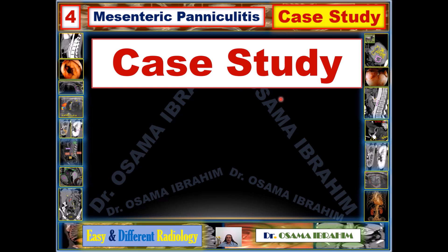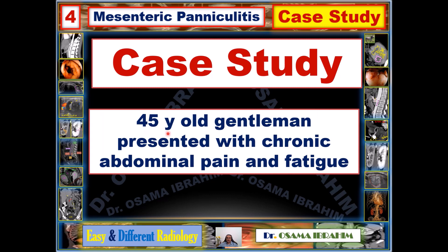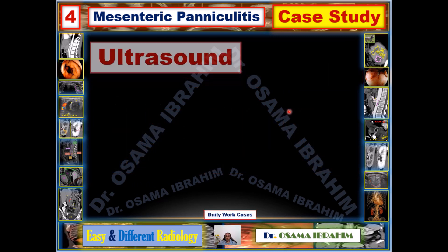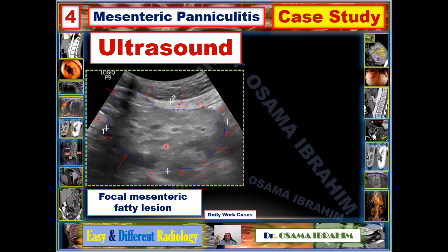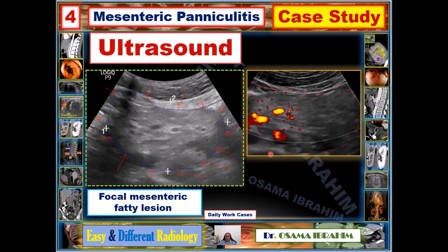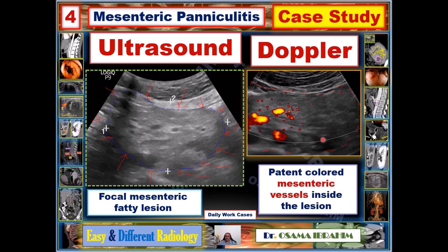In this case study from my daily work, a 45-year-old gentleman presented with chronic abdominal pain and fatigue. On ultrasound, I identified a mass in the middle of the abdomen containing fat. On Doppler study, I could discriminate patent vessels within the fat — colored on the Doppler images — which is a good sign supporting the diagnosis of mesenteric paniculitis.